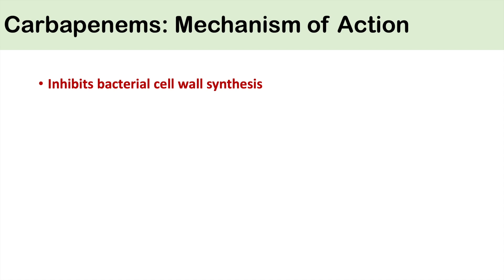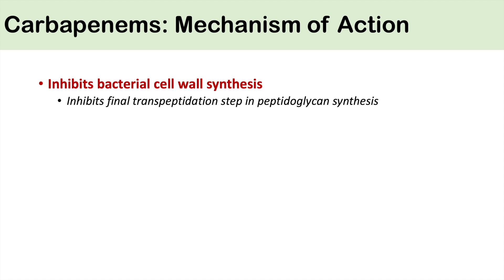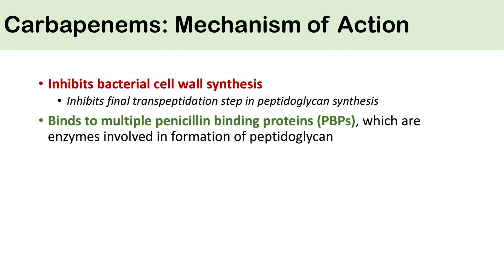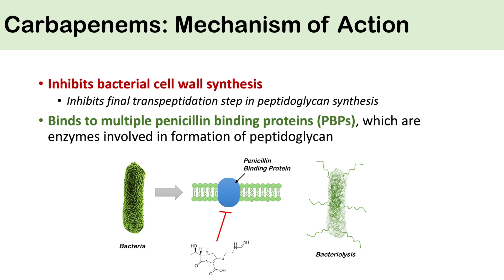The carbapenems, like other penicillins and other beta-lactam antibiotics, inhibit bacterial cell wall synthesis. They do this by inhibiting the final transpeptidation step in peptidoglycan synthesis. They do this by binding to multiple penicillin binding proteins, or PBPs, which are the enzymes involved in formation of peptidoglycan. A carbapenem like imipenem will bind to a penicillin binding protein, inhibiting that protein and inhibiting the bacteria from producing a peptidoglycan cell wall. The bacteria will have an essentially defective cell wall, which will cause lysis of the bacteria — bacterial lysis. That's how the carbapenems work, similarly to other penicillins.